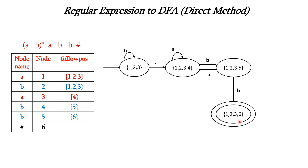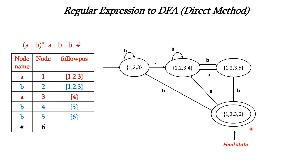State {1,2,3,6} is considered a final state, indicated with a double circle. This is because hash marks the end of the expression, and its node number is 6 — so any state containing the number 6 is a final state. Thus we have completed the conversion of the regular expression to DFA using the direct method. Thank you.